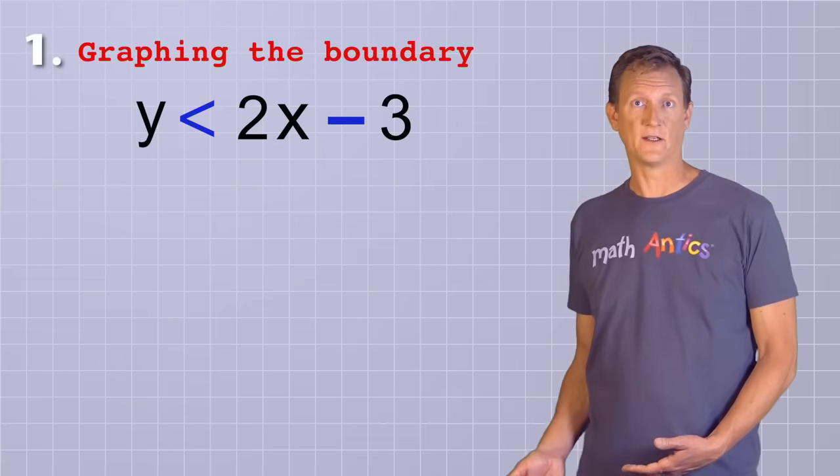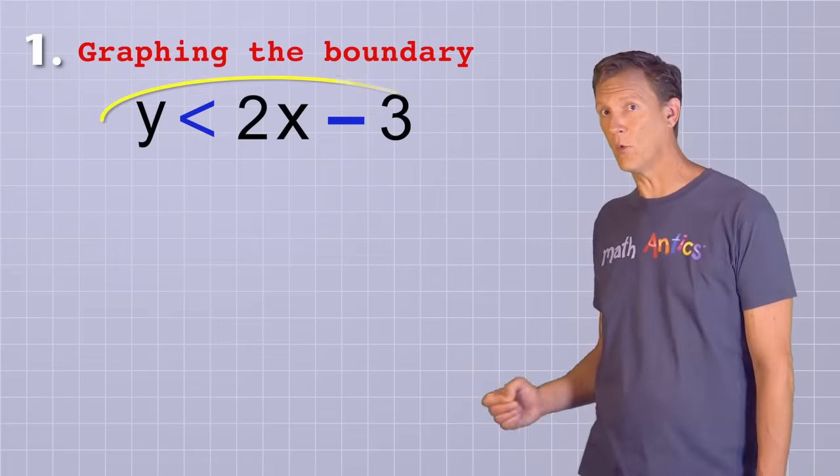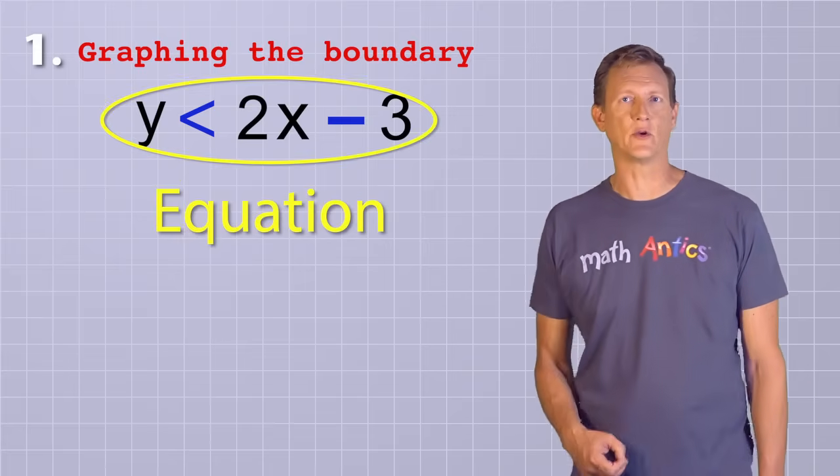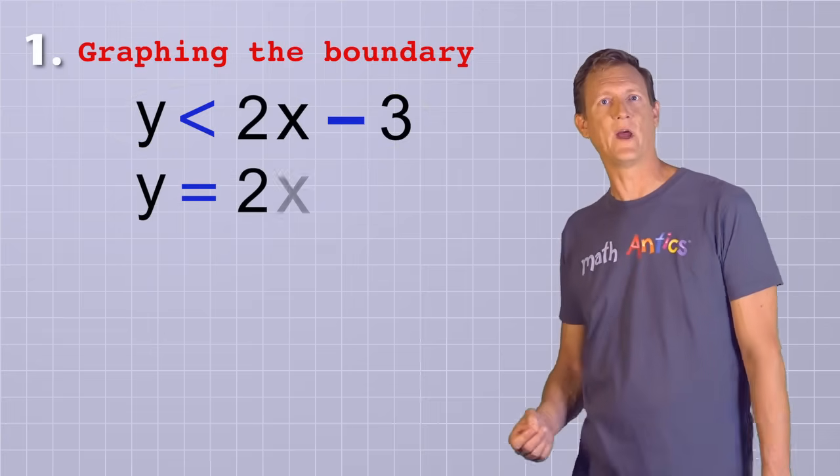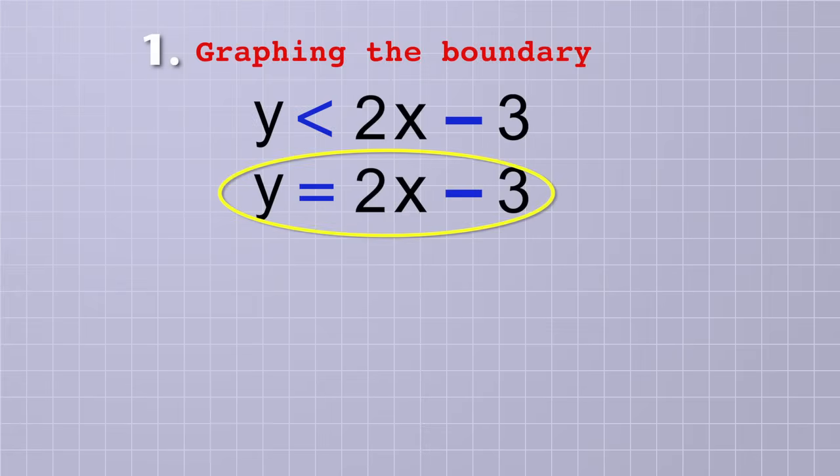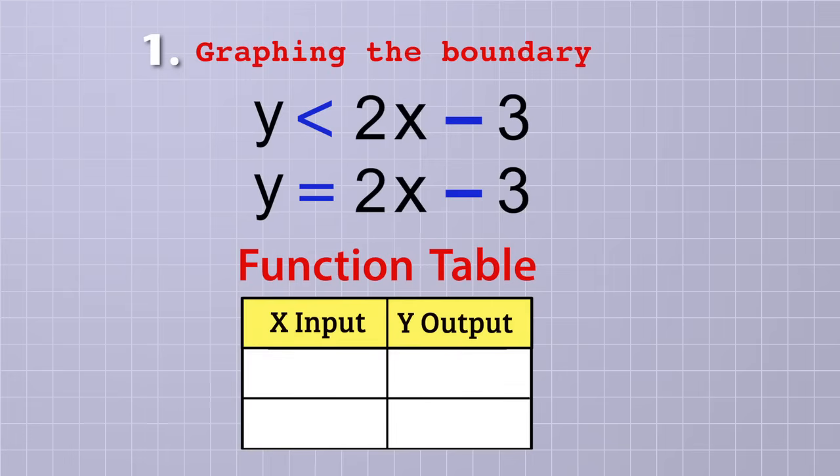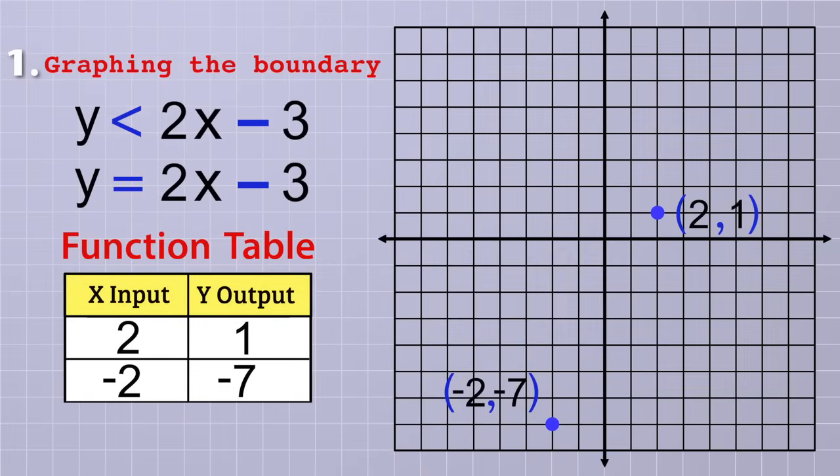Let's start with graphing the boundary line. To do that, first pretend that the inequality you have is actually an equation, so that you can graph it exactly the same way you'd graph a line. That means rewriting it as y equals 2x minus 3. To graph that line, we just need to plot any two points along it and connect the dots. It's kind of like making a function table, but we only need to find the y output values for two different x input values. Any two points will do, so I'm going to pick x equals 2 and x equals negative 2 to keep things simple. If x is 2, then y will be 1. And if x is negative 2, then y will be negative 7. Plotting those two points on the graph and then connecting the dots gives us this line, which is the boundary line of the inequality.